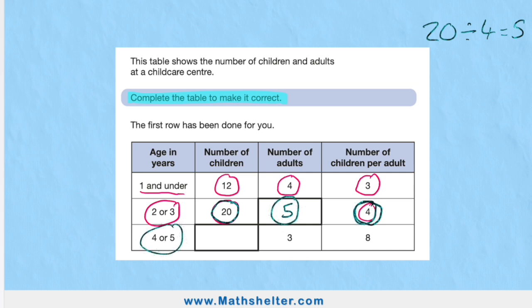In my four-or-five category, we don't know how many children, but we know there are three adults and there are eight children per adult. So this time I do three times my eight, which will give me my total of 24. So therefore there's 24 children.